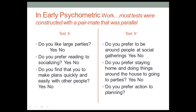On the left-hand side I have my original test, and on the right-hand side I'm writing a parallel test. What I try to do is write each item so that it conveys the same information as the one on the original test. On the original test I ask, 'Do you like large parties?' — yes or no. On the second test I ask, 'Do you prefer to be around people at social gatherings?' On the first test, item two: 'Do you prefer reading to socializing?' — a good introversion item. My parallel item is, 'Do you prefer staying home and doing things around the house to going to parties?' — also a good introversion item.